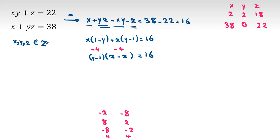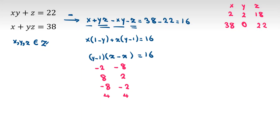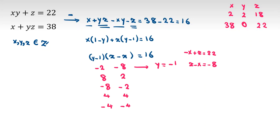Remaining cases: (-2, -8), (8, 2), (-8, -2), (4, 4), (-4, -4). For case (-2, -8): y minus 1 = -2, so y = -1, z minus x = -8. Replacing y = -1: -x + z = 22. But z minus x is also -8, giving 22 = -8, which is impossible.